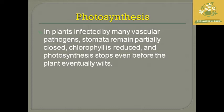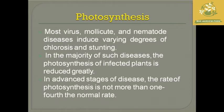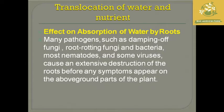Photosynthesis can even stop before the plant eventually dies. Most virus, nematode, and other diseases cause variegation of chlorophylls, chlorosis, and stunting in the infected plant. In the majority of such diseases, photosynthesis of the infected plant is greatly reduced. In advanced stages of disease, the rate of photosynthesis may be no more than one fourth of its normal rate, showing a gradual reduction from the start of infection to its final stage.